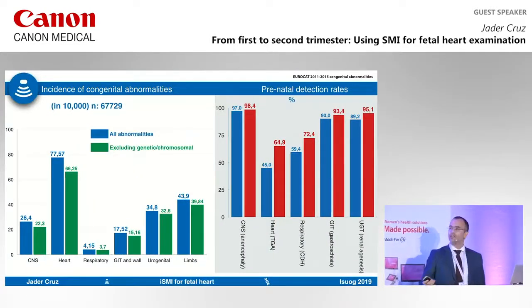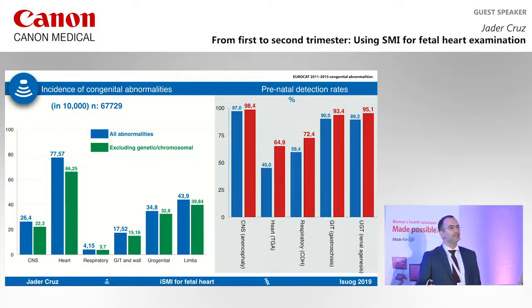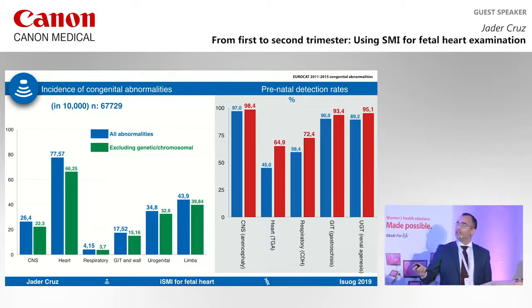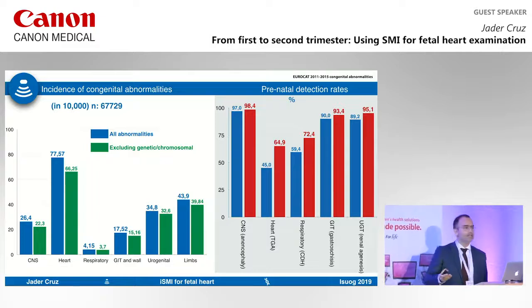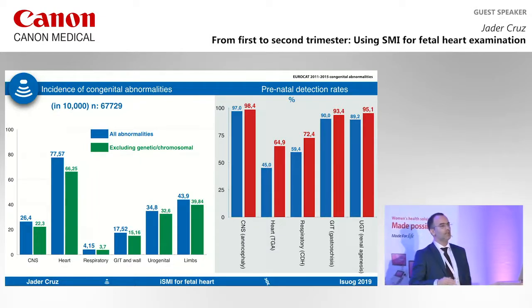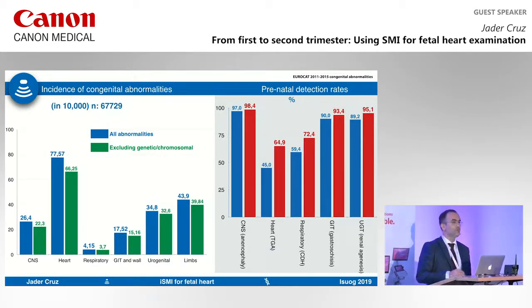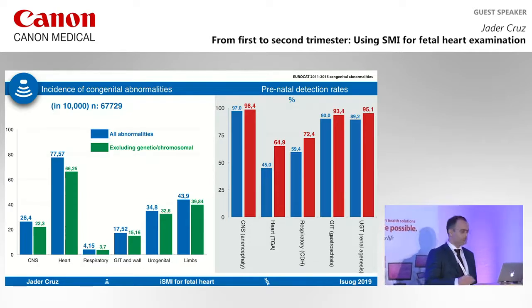Why the heart? Because fetal heart abnormalities are the most common structural abnormality, and the big abnormalities are the least detected. These are data from EuroCat, the most recent data until 2015. Even from 2011 to 2015, detection rates for major cardiac abnormalities like transposition of the great arteries increased quite a lot, but it is still one of the least detected. So there is a role to play to improve detection rates and to facilitate visualization of cardiac structures.